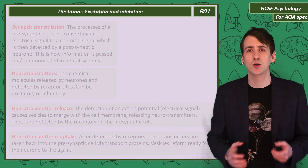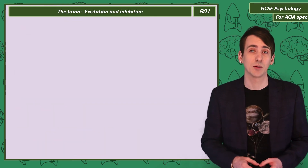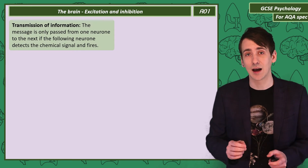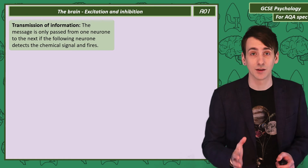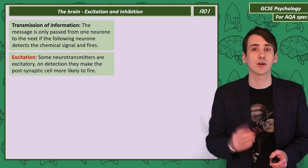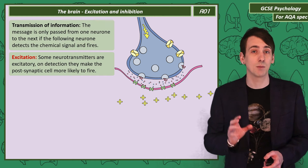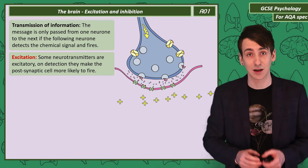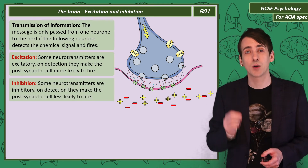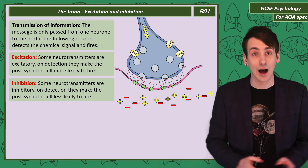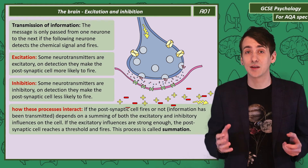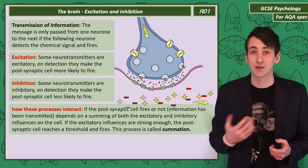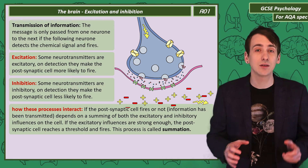The electrochemical message will only be sent on if the postsynaptic cell detects the chemical message and then fires. Some neurotransmitters are excitatory — when detected by the postsynaptic cell, they make it more likely to fire, and this is called excitation. Some neurotransmitters when detected make the postsynaptic cell less likely to fire, and that's inhibition. These two processes interact, and the postsynaptic cell firing or not depends on the combination of excitatory and inhibitory processes — this is called summation.